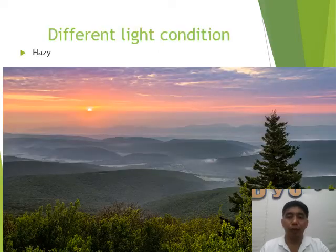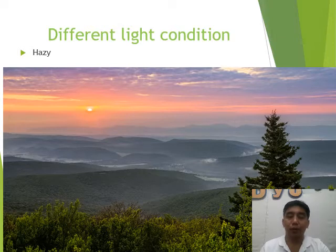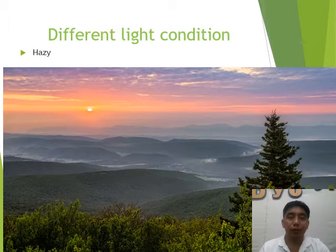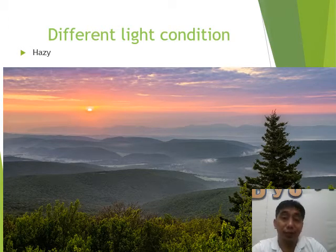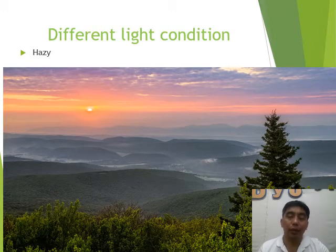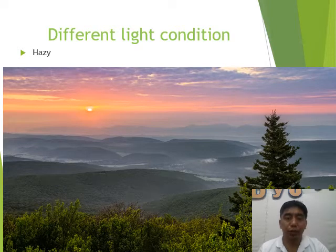When we talk about light, there is what we call the condition of light — what light looks like. Whenever you arrive at a crime scene, there are many parts of your camera you need to adjust: the ISO, the shutter speed, and the F-number. One basis for adjusting these is the condition of light. The moment you arrive at your crime scene, look around and assess whether the light is hazy, dull, or bright.